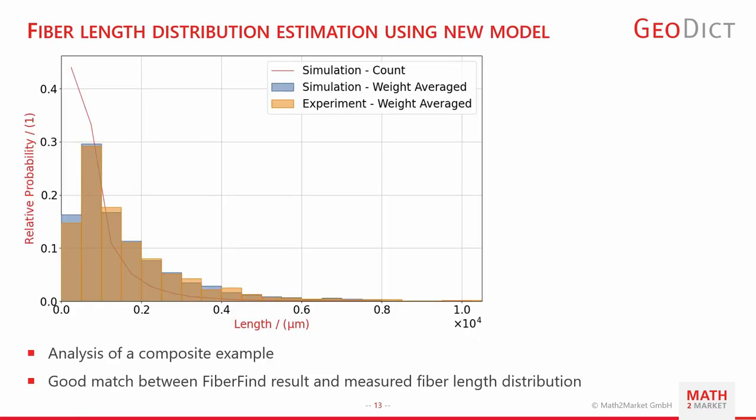This leads to a better prediction of fiber length distribution. The network was applied to a composite example, and an experiment where fiber length was experimentally determined shows a good match between the FiberFind AI statistics result and the experimental data.